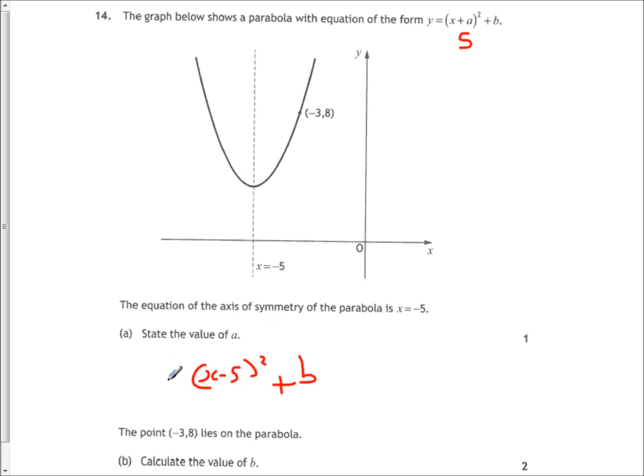You know that if the point (-3, 8) satisfies, if it lies in the parabola, it has to satisfy that equation. Replace the y value with 8. Replace the x with negative 3. And you can just do some algebra to work out, solve that equation and work out the value of b.